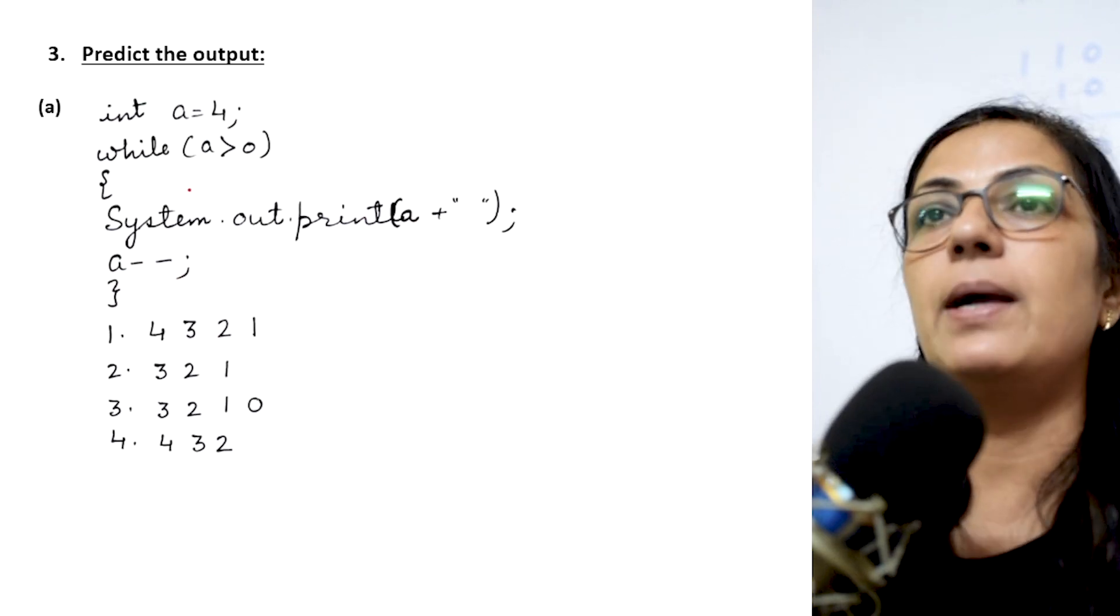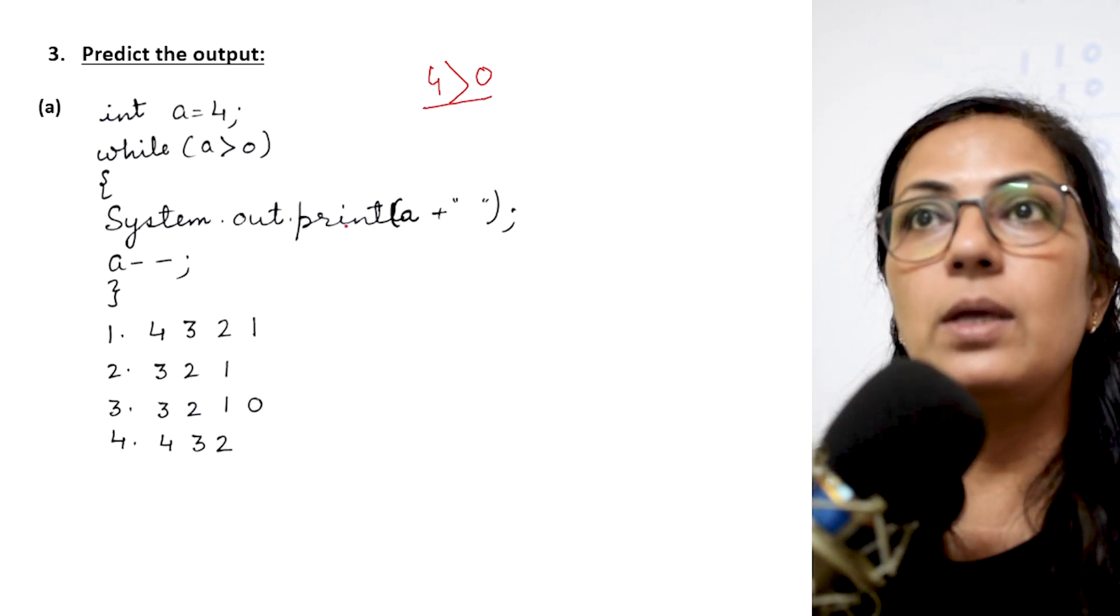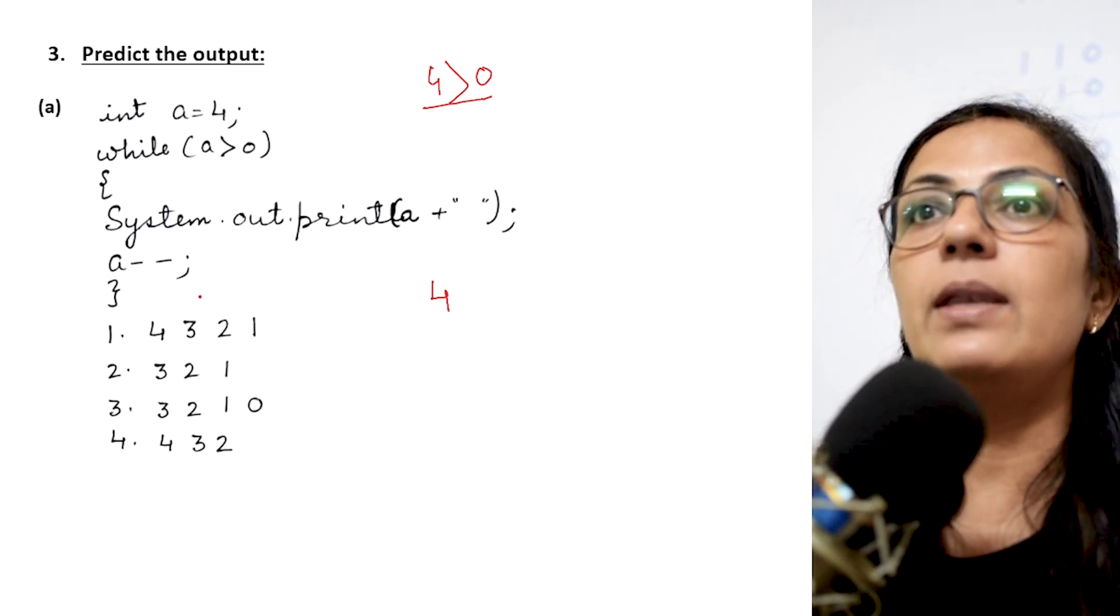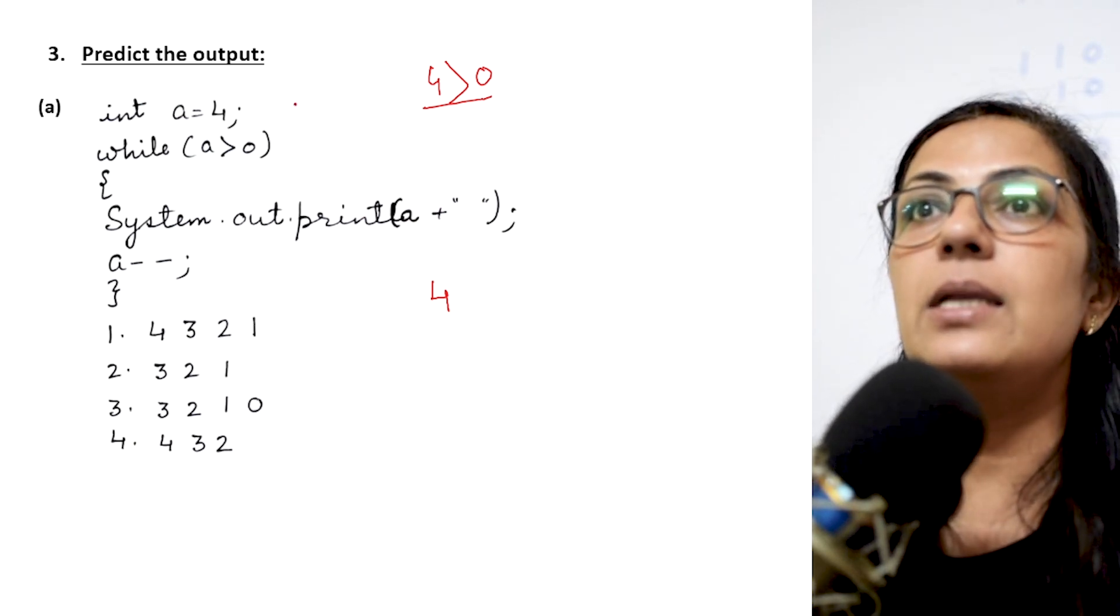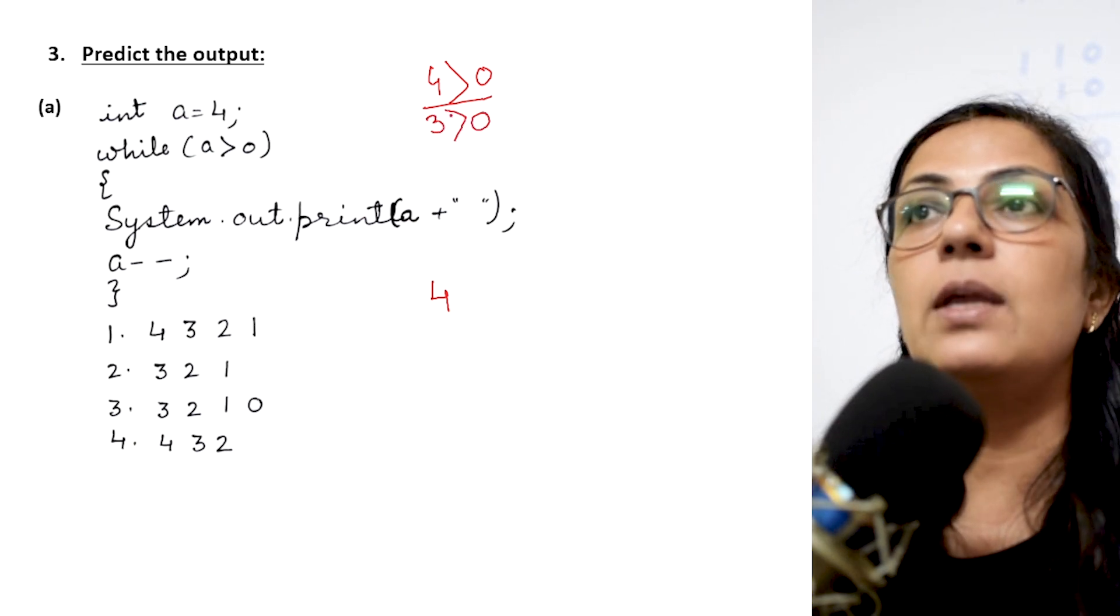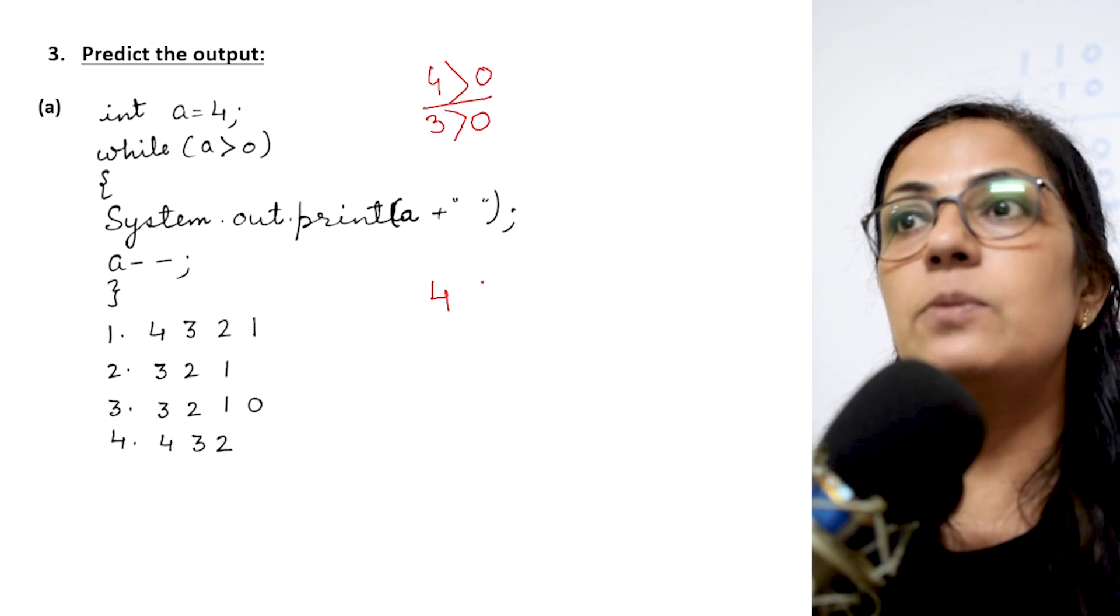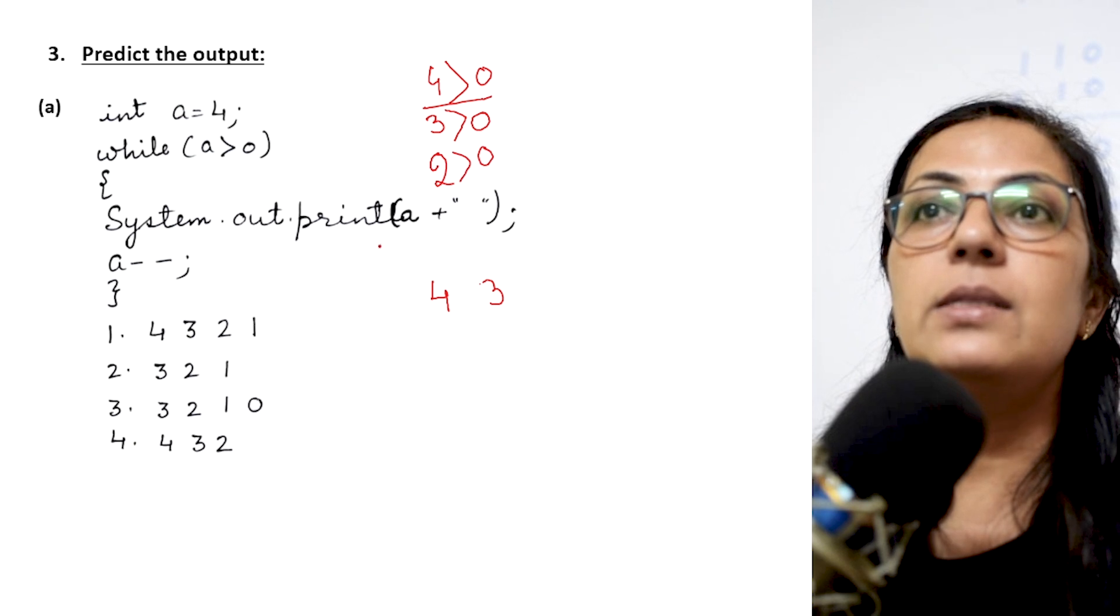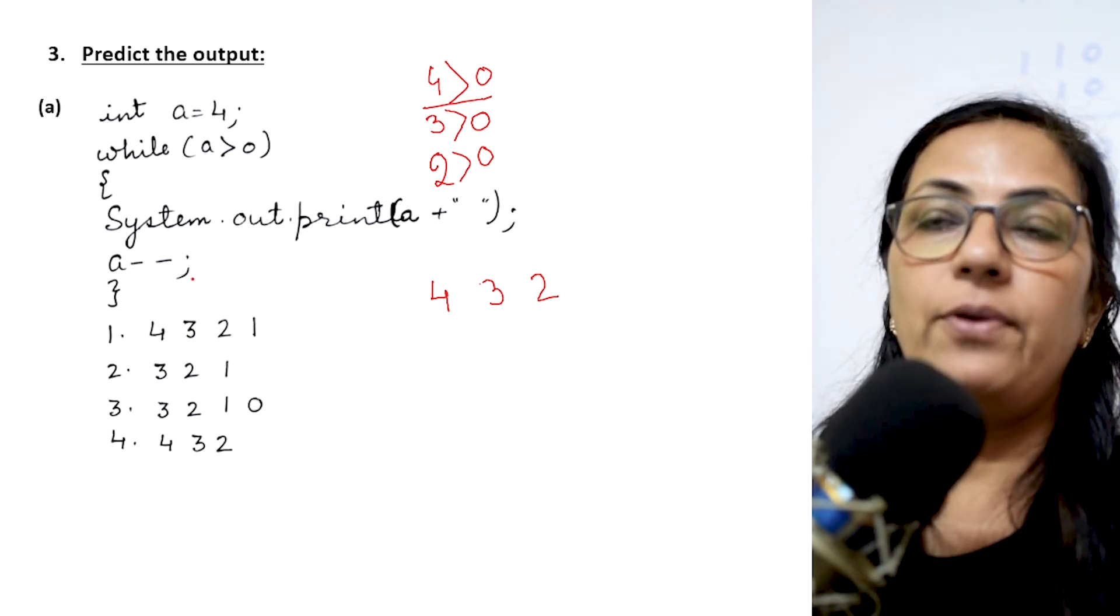Now we move on to the next question. Predict the output. First part. Int a equals to 4, while a is greater than 0. 4 is greater than 0, yes, condition is true. It will enter into the loop. Print a plus a space is given. So it will print 4 and a space will be given. A minus minus. After printing 4 the value of a will be decreased by 1 and again the condition will be checked. Now the value of a is 3. 3 is greater than 0, yes, still it is true. So after that space, 3 will be displayed. A minus minus, the value of a will become 2.